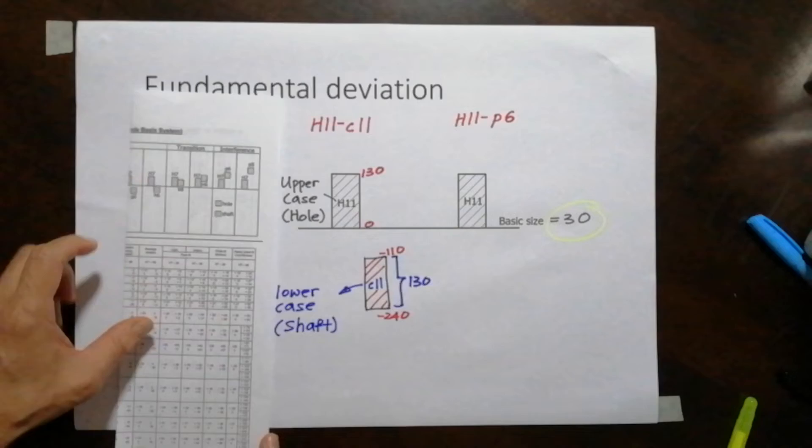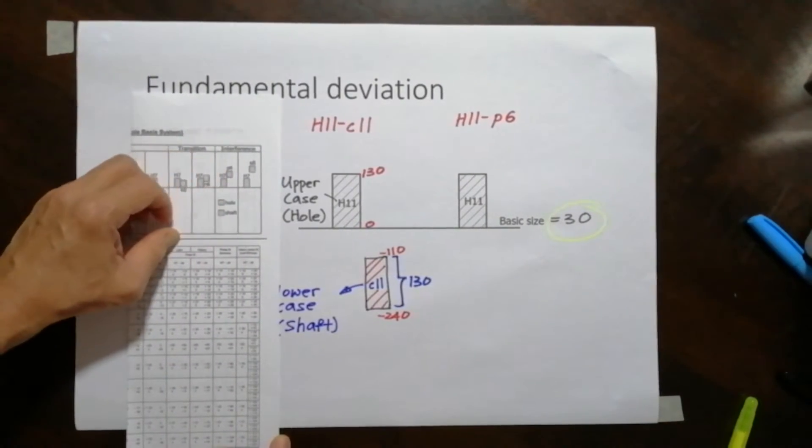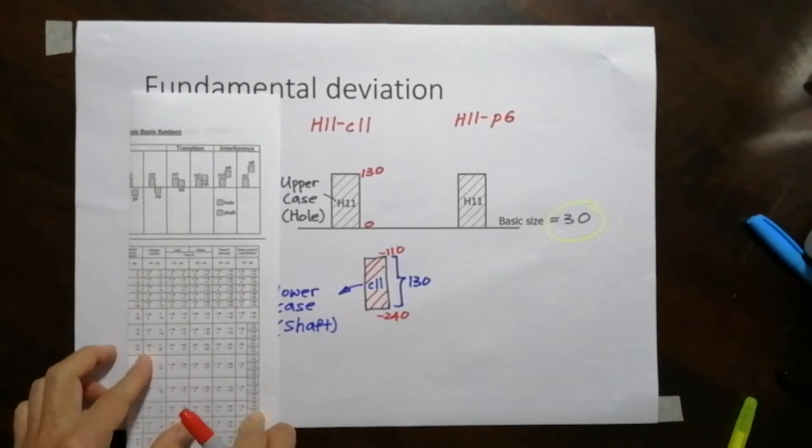But I flip it on the other side. I see P6 here. So I'm going to draw the P6 over there. So P6 at size 30.